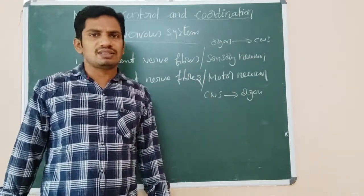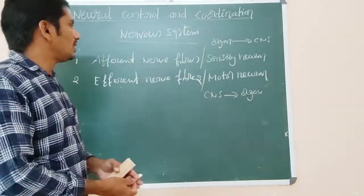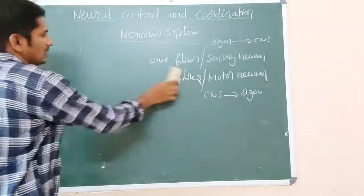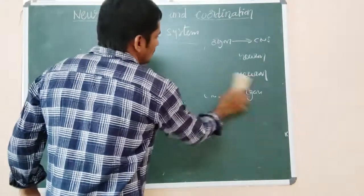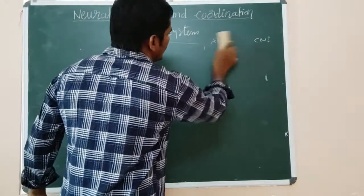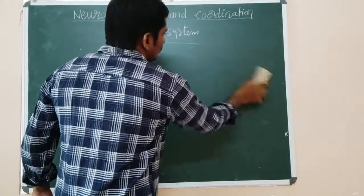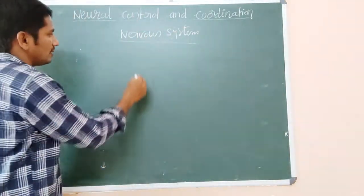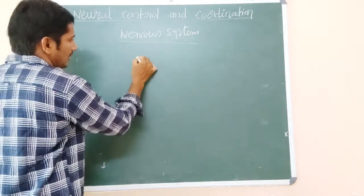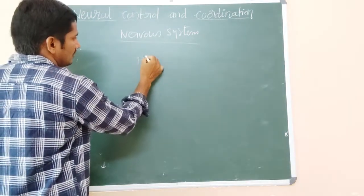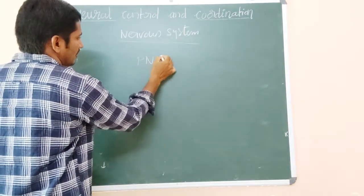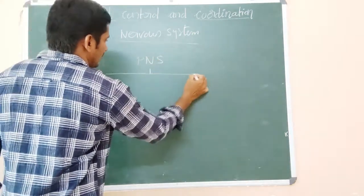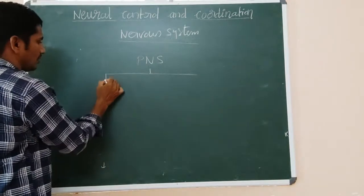In the peripheral nervous system, you already know the classification includes the somatic nervous system and the autonomic nervous system. The peripheral nervous system thus has these two major subdivisions.